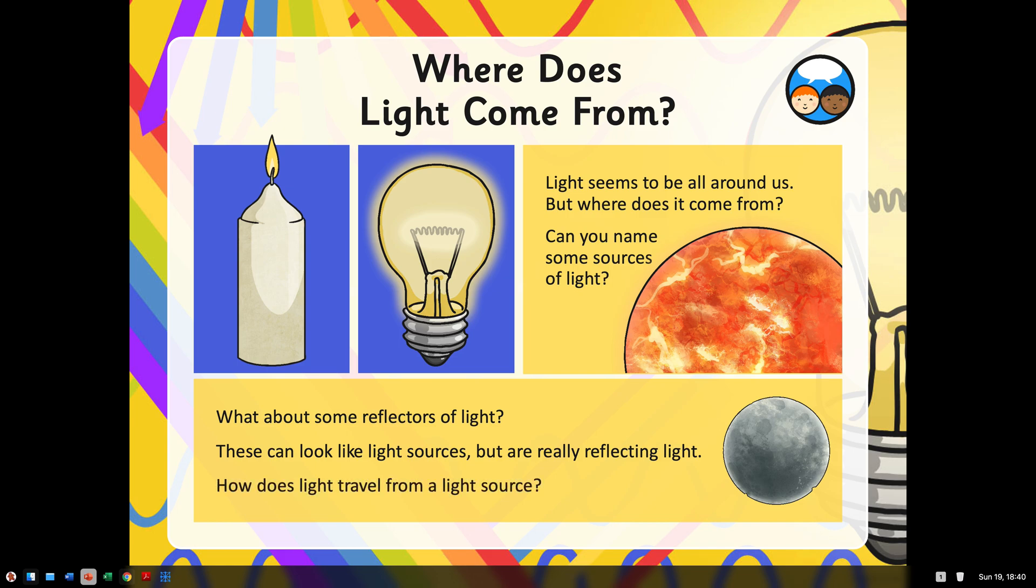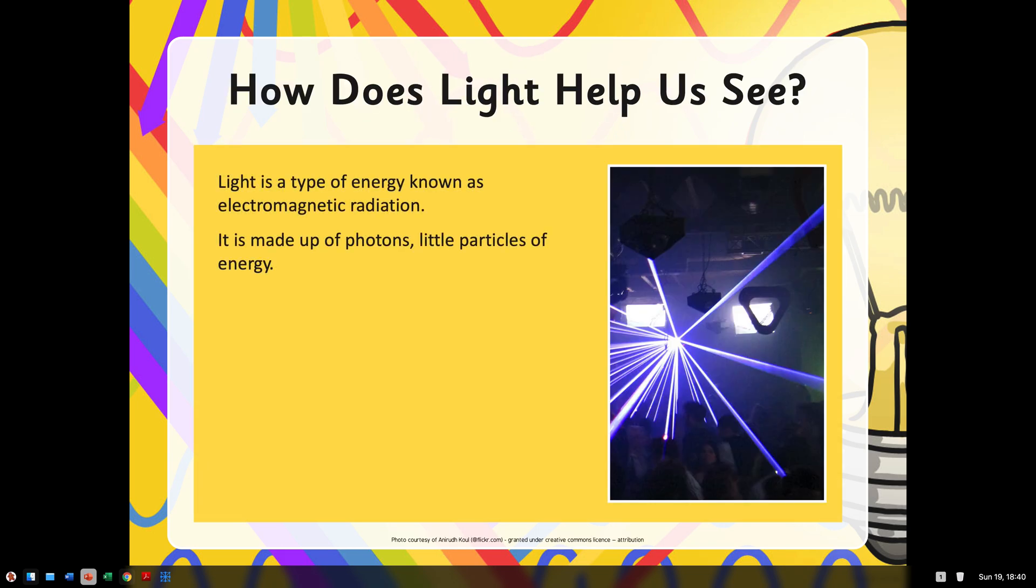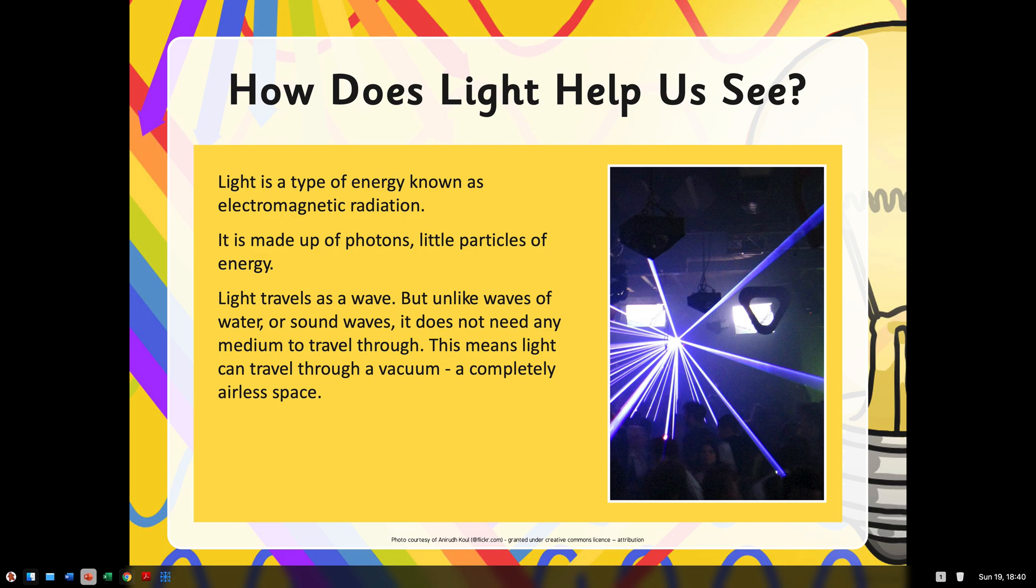How does light travel from source? Light is a type of energy known as electromagnetic radiation. Basically, it's a lot of photons, which are little particles of energy. Imagine little tiny bits of energy all grouped together. Light travels as a wave. But unlike waves of water or sound waves, it does not need any medium to travel through. That means it doesn't have to go through anything. For example, light from the sun goes through space. Space has no air. It is a vacuum, but light can still travel through it.